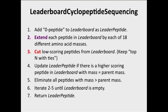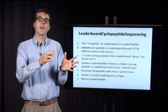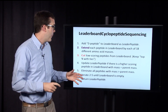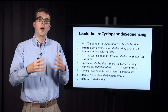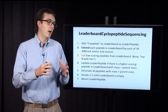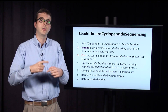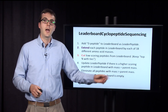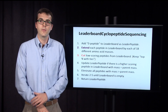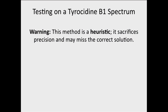We also eliminate any peptides whose mass grows too big — if their mass exceeds the parent mass, we don't expand them anymore. Once we do these steps, we iterate branch, bound, and update over and over again. This procedure will always eventually result in an empty leaderboard, and at that point we return the leader — the best peptide we've encountered so far.